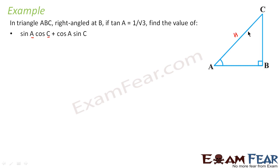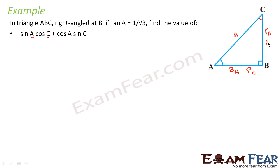In this triangle, AC will always be the hypotenuse. If we consider angle A as the frame of reference, BC is the perpendicular and AB is the base. When we take C as the frame of reference, AB becomes the perpendicular and BC becomes the base.